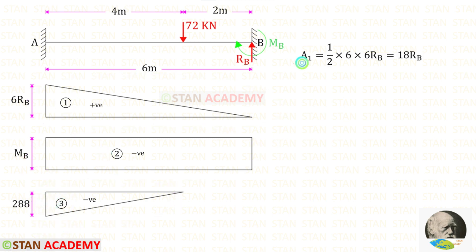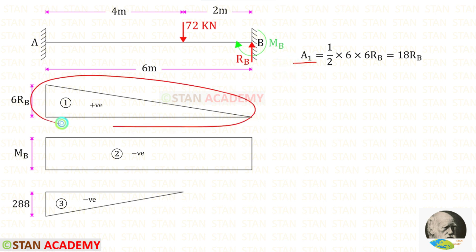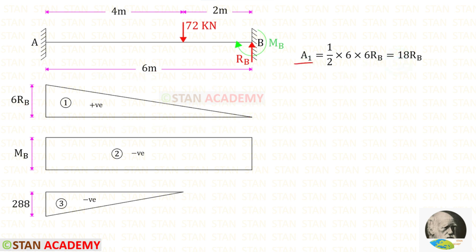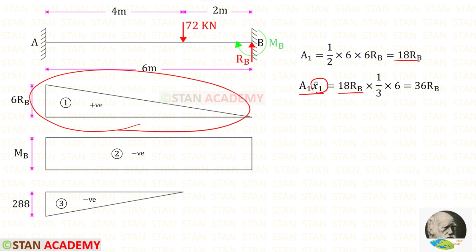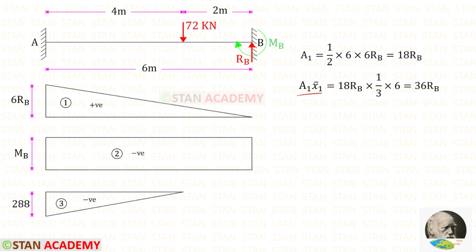Now let us find area 1. We know that it is a triangle. The area formula for a triangle is 1/2 × base × height — but here we use 1/3 × B for the centroid form. The breadth is 6 and the height is 6RB. For area 1 we get 18RB. Now let us find x1̄. For this triangle, the centroid distance towards the left is 1/3 × B. Here the breadth is 6, so 1/3 × 6. For area 1, x1̄ gives us 36RB.